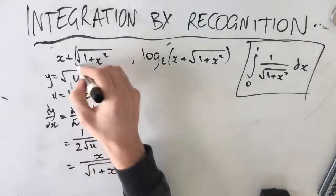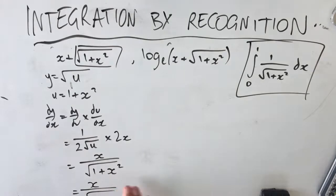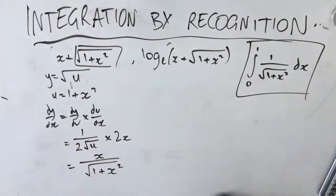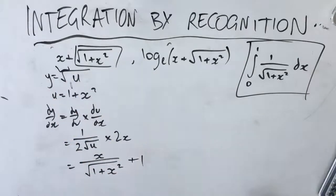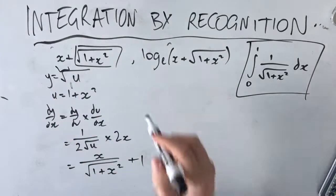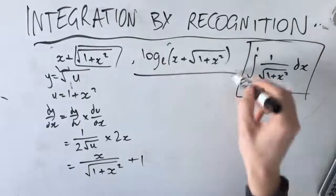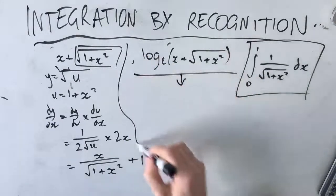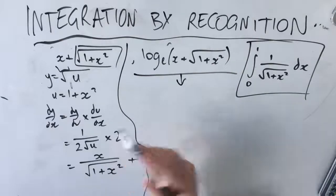So that's the derivative of root(1 + x²). Adding the derivative of the x term, which is 1, gives us the total derivative: x over root(1 + x²) plus 1. Now the next task is to find the derivative of log_e(x + root(1 + x²)).